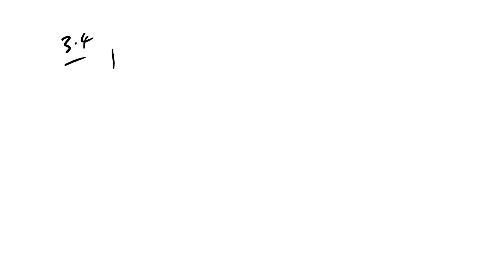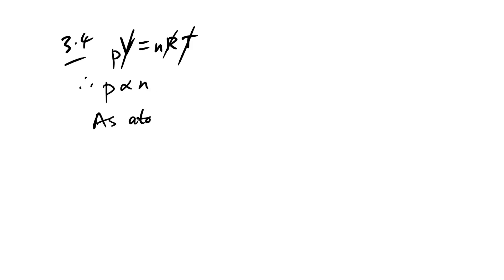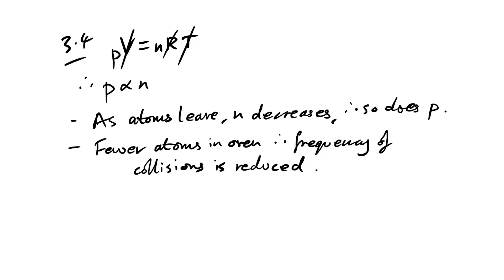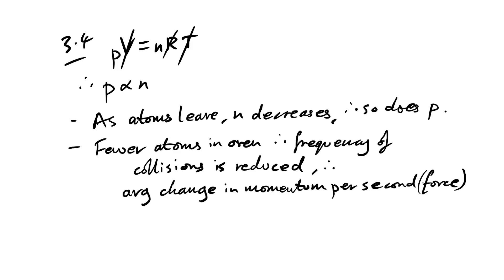Question 3.4: temperature is kept constant but pressure decreases as atoms leave. Explain using kinetic theory. Using PV = NRT, with V, T, and R constant, P is proportional to N. As atoms leave, N decreases, so P decreases. In kinetic theory terms: fewer atoms in the oven means the frequency of collisions with the walls is reduced, so the average change in momentum per second — which is force — is reduced, and therefore so is the pressure.